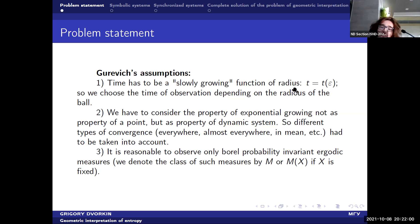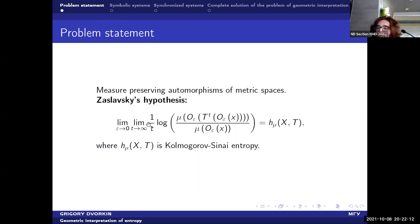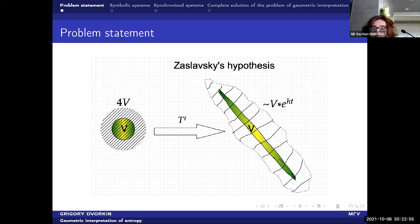The second assumption is we have to consider the property of exponential growing, not as property of a point, but as a property of dynamic system. That means we can consider this alignment as alignment in mean, or almost everywhere, or in probability. And it stands out that for smooth systems, for example, the alignment almost everywhere is really productive. And for symbolic systems, that is the target of my work, alignment in mean is productive. Different types of alignments are productive for different systems.